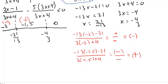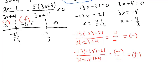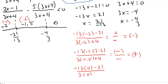For 0: negative 13 times 0 minus 21 over 3 times 0 plus 4. That's negative 21 over positive 4, which is negative. So anything in this region is negative.